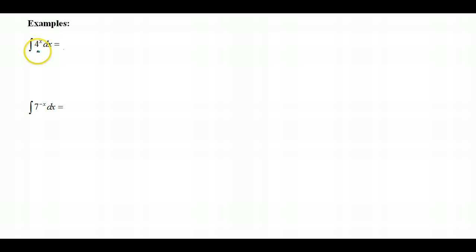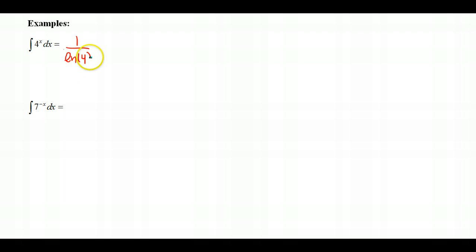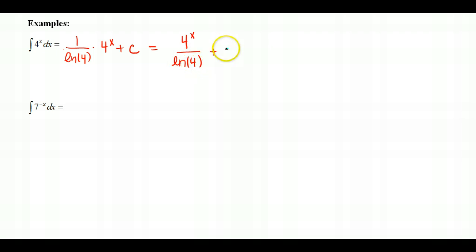In this first example, I'm integrating 4 to the power of x dx. This is a direct application of the general antiderivative of an exponential. The base here is 4, so the rule gives us 1 over the natural log of 4 times 4 to the x, plus c. Or we can write it as 4 to the x in the numerator over the natural log of 4, plus c.